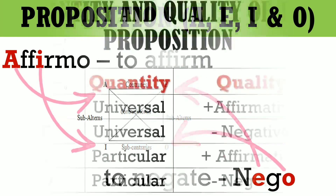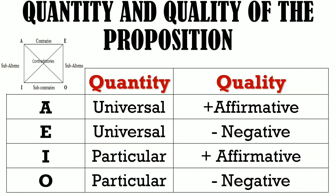Let's proceed to the quantity and quality of the proposition. Our kinds of proposition — A, E, I, and O — have corresponding quantity and quality. A is universal affirmative. If we're talking about universal affirmative, the idea of an A proposition is universal and you affirm it — meaning you accept it, with no negation occurring.